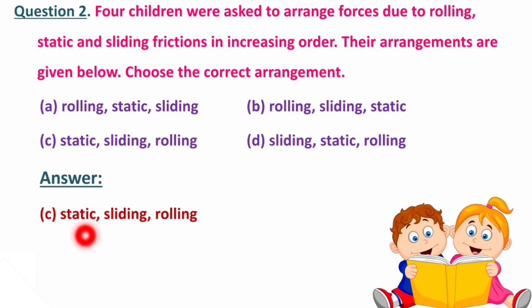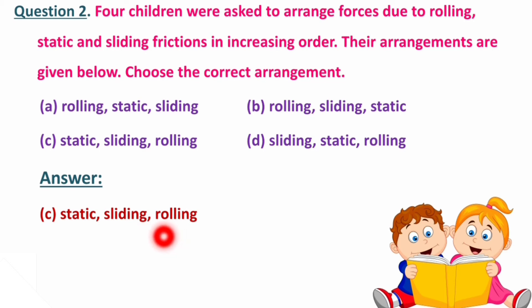Because jo bhi object steady position mein hota hai, static hota hai, wahan pe do jo surfaces hain, do jo objects hain, wo ek dusare ke saath interlocked hote hain. Sliding mein comparatively kam friction hota hai. Rolling object jo hai, woh continuous roll kar raha hai, toh uske paas sufficient time nahi hai interlocking ka. That's why, wahan pe force of friction jo hai, woh minimum hota hai.